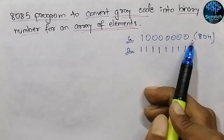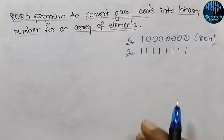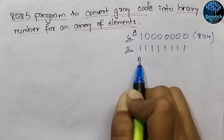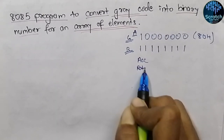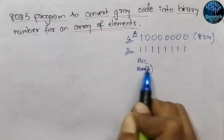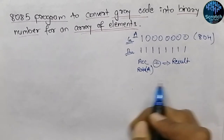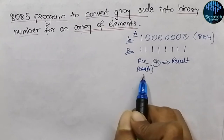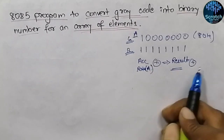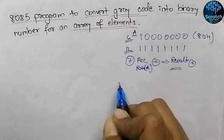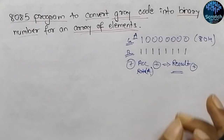In the assembly language program, we take the main data and rotate it right by one bit, then perform an XOR operation between the actual data and the rotated data. The accumulator holds the actual data; we rotate it right to get the rotated value, then XOR them together to get a result. We then rotate the result again and XOR again. These steps are performed seven times total, as explained in the previous video — this handles a single data value.